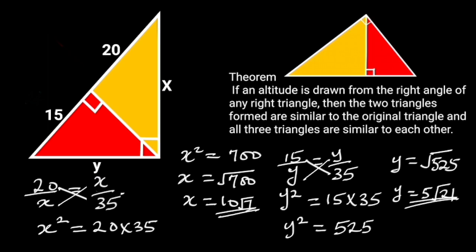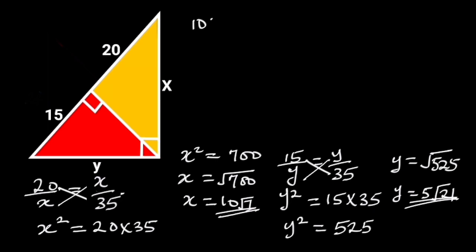However, we can use Pythagoras theorem to solve for y once we know the value of x. In this case we are considering the original triangle. From Pythagoras theorem, 10 root 7 squared plus y squared is equal to 35 squared.